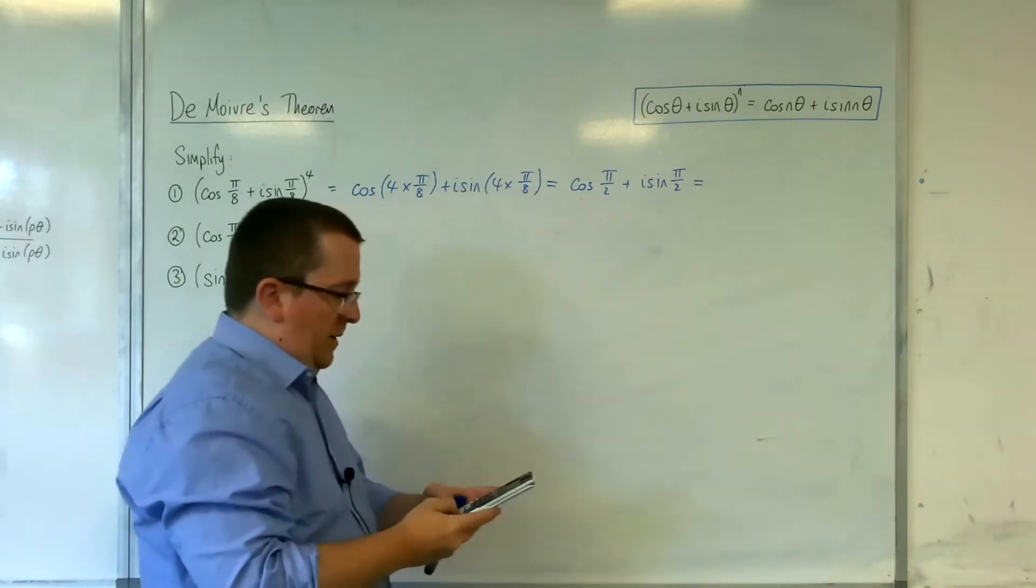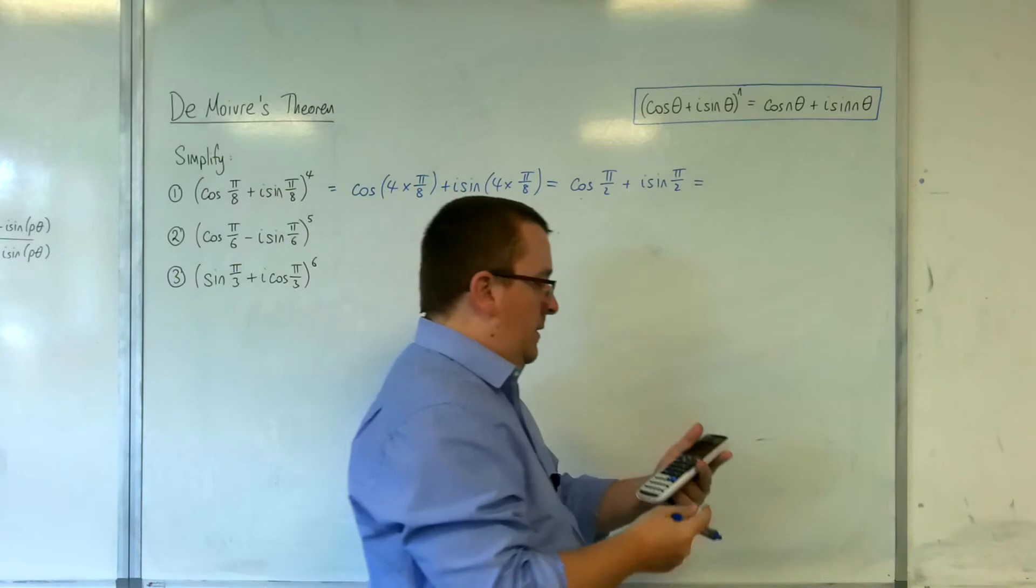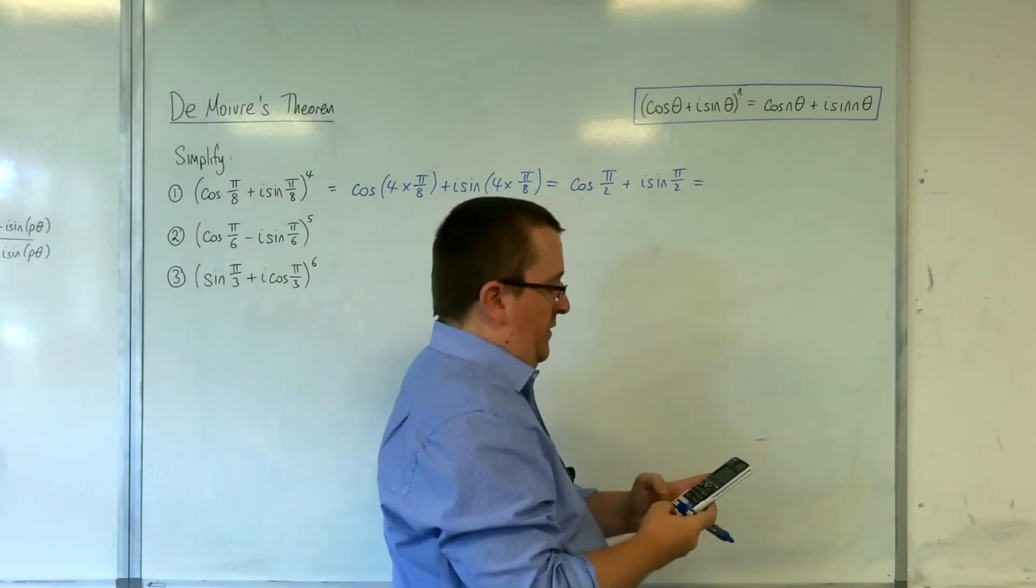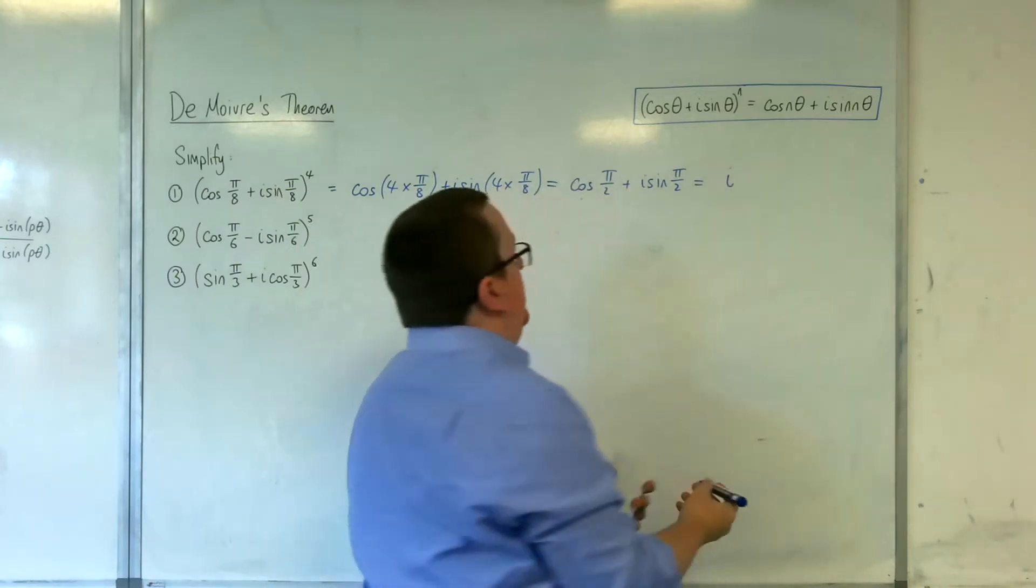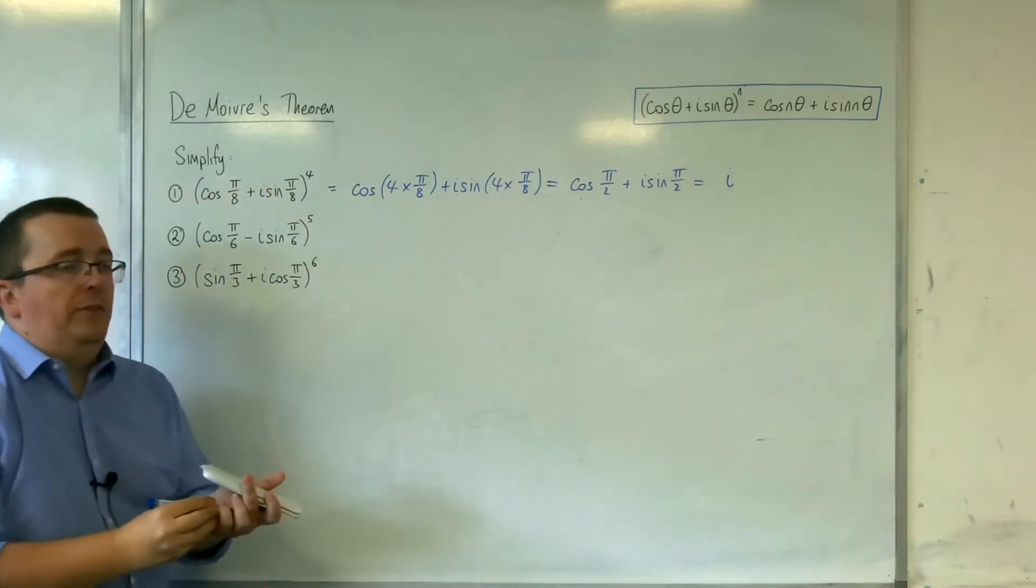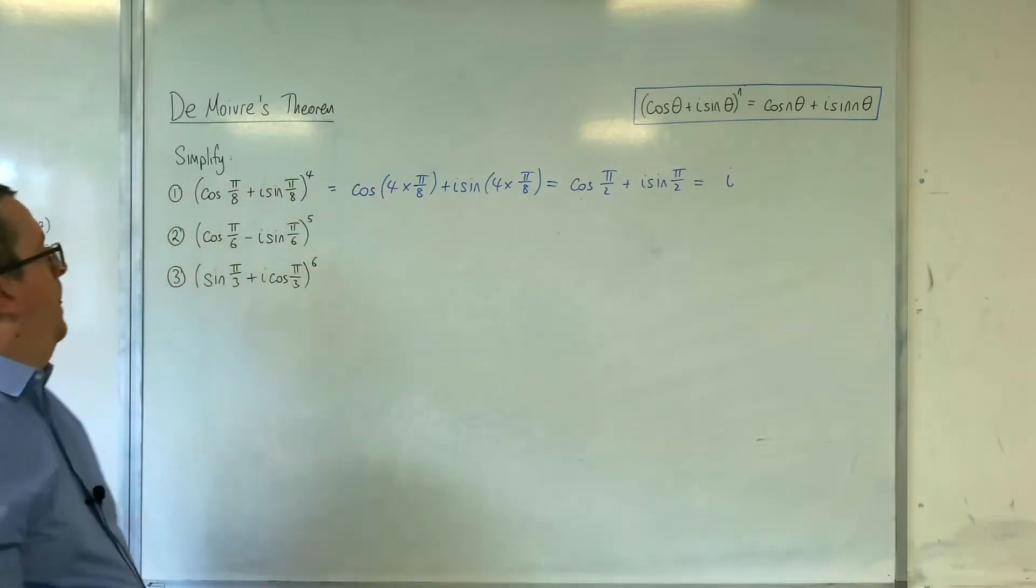Now cosine of π over 2 is of course 0, and sine of π over 2 is 1, and so you just get left with i. 0 plus i times 1.